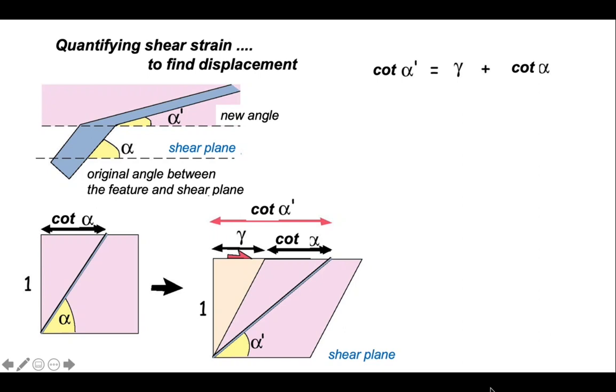So we need to know the orientation of the shear plane. If we know that, we can measure alpha, the orientation of our feature outside the shear zone. And we can also measure alpha prime, the orientation of that feature relative to the shear plane in the shear zone. We know alpha prime and alpha, so therefore we can find the shear strain, gamma.